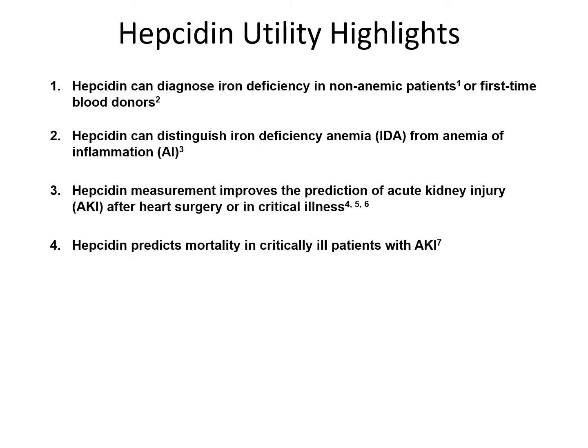Unregulated iron can cause the formation of reactive oxygen species (ROS) that lead to tissue damage. After trauma, seen post-surgery or in critical care, hepcidin levels can predict the onset of acute kidney injury (AKI). Higher hepcidin locks away iron, protecting the body from the creation of ROS. Therefore, it may be important to ensure hepcidin levels are above a certain threshold before a surgery to minimize the risk of AKI post-surgery.